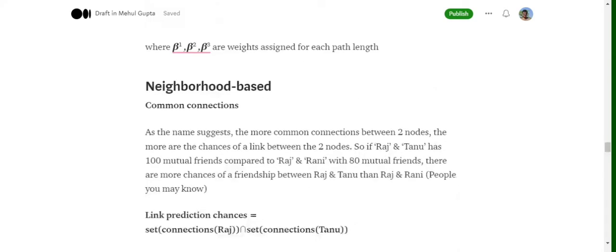Now, neighbor-based criteria for future relationship prediction. One of the most common is common connections. So for example, in case of friendship, say you have four common friends between Raj and Tanu. So there are highly likely chances that these two might become friends as well. So more the common connections between two nodes, more are the chances that they might develop a future edge.